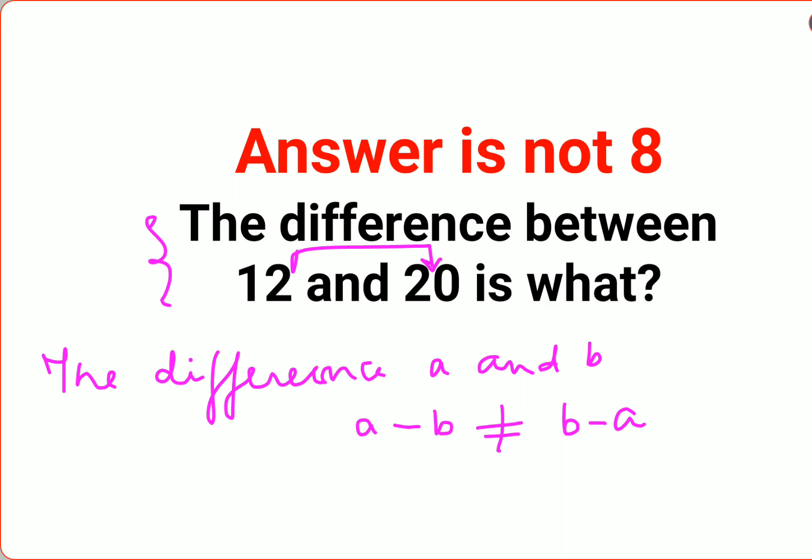When they are saying the word difference, that means they need the value or the difference between 12 minus 20. So basically you are doing subtraction, and when you do subtraction of the smaller number from the bigger number, the value always becomes negative.